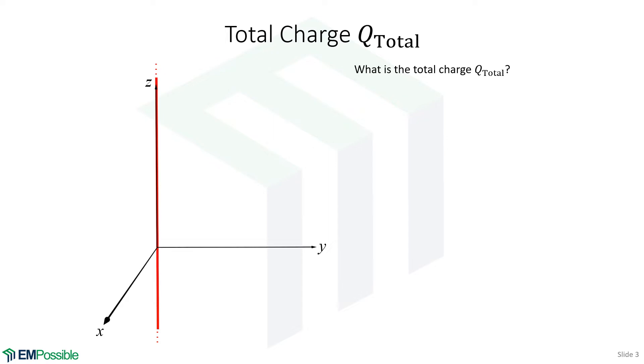So first, for the total charge, we now have this infinite line charge. The general expression, total charge, is charge density times the length. Well, what is the length of an infinite line charge? It's infinite.